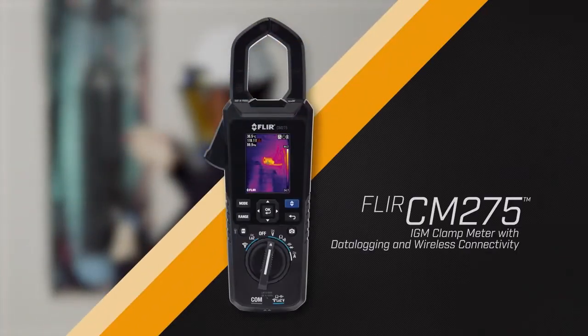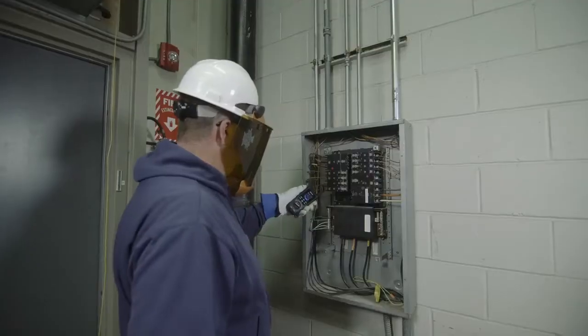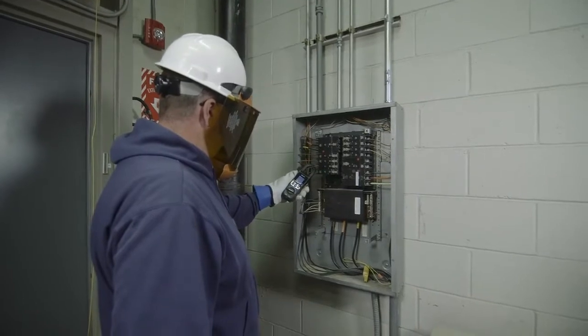The FLIR CM275 IGM Clamp Meter with Data Logging. The all-in-one troubleshooting tool you need for electrical, mechanical, and electronic systems.